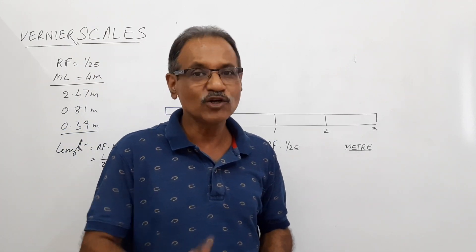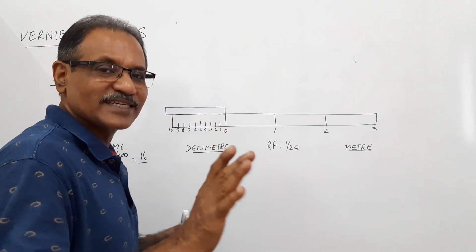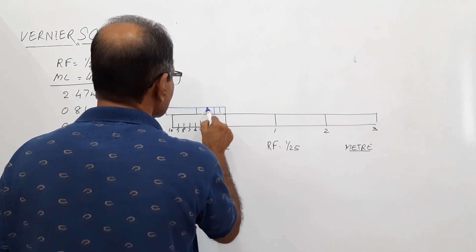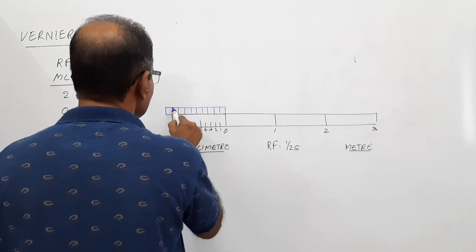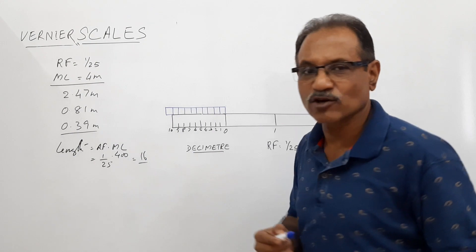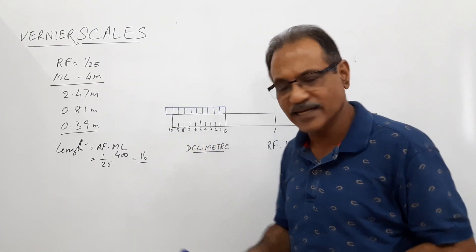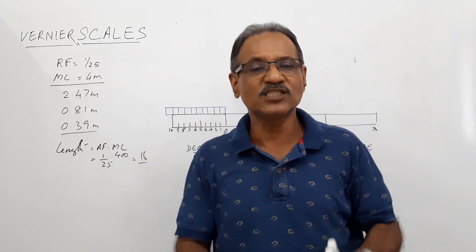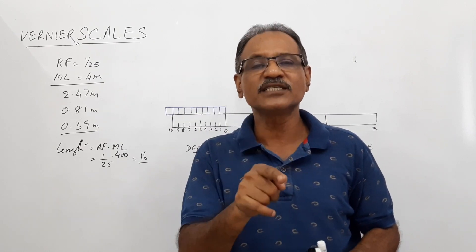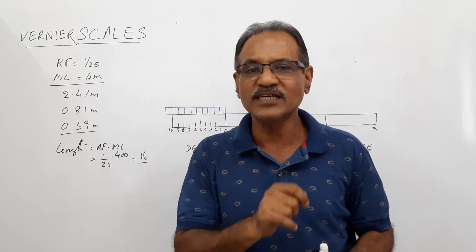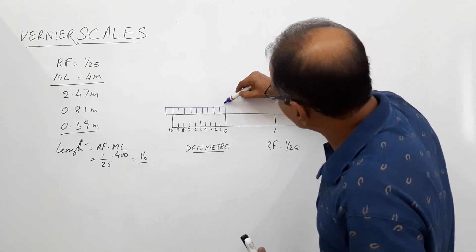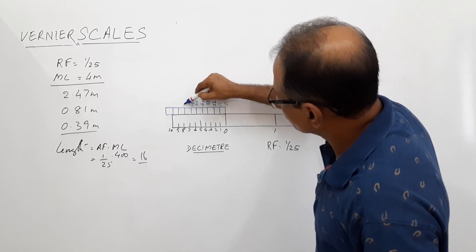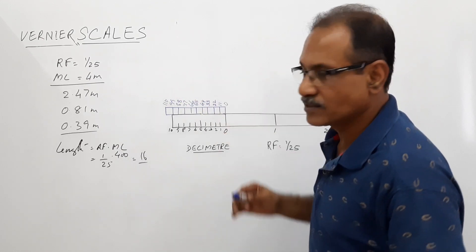44 millimeters needs to be divided into 10 equal parts, so you must use the line division procedure. You have divided 11 decimeters into 10 equal parts, so each division is 1.1 decimeters, which equals 11 centimeters. Therefore label the vernier divisions: 0, 11, 22, 33, 44, 55, 66, 77, 88, 99, 110 — in centimeters.